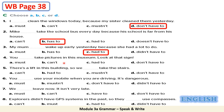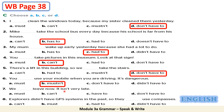Four: you can't take pictures in this museum — look at the sign. Five: there's a lift in this building, so we don't have to take the stairs. Six: you mustn't use your mobile when you are driving — it's dangerous.